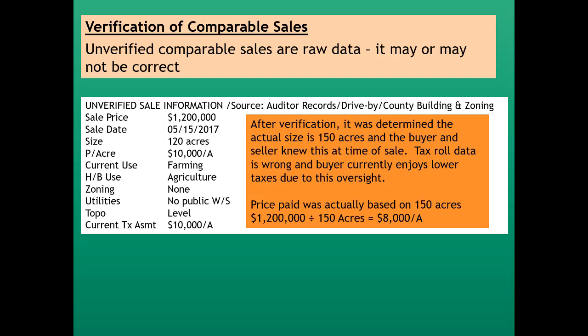After verification, it was determined that the actual size is 150 acres, not 120 acres, and that the buyer and seller knew this at the time of sale — the tax roll data is wrong, and the buyer currently enjoys a lower tax amount due to this oversight. So the price the buyer actually paid was based on 150 acres. Dividing $1.2 million by 150 acres gives $8,000 an acre, not $10,000 an acre. That's why we verify sales — to have accurate information.